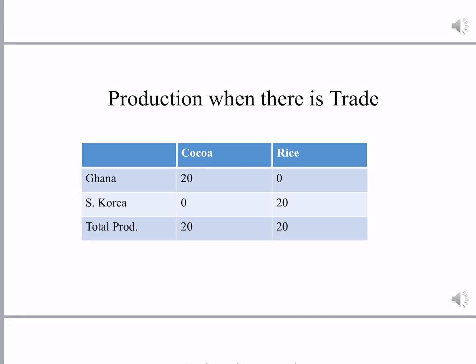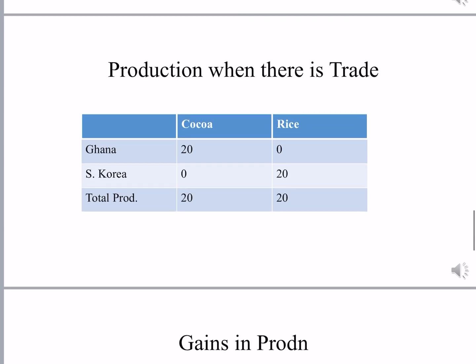If both these countries start trading, Ghana will produce cocoa because it has absolute advantage in cocoa production, and South Korea will produce rice because it has absolute advantage in rice production. Ghana will specialize in production of cocoa and South Korea will specialize in rice production. The total production comes to 20 tons of cocoa and 20 tons of rice. Ghana will not produce any rice, and South Korea will not produce any cocoa, because they are utilizing their total resource of 200 tons for the commodity in which they have absolute advantage.